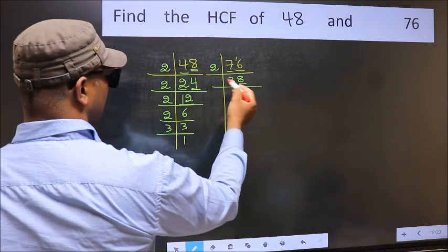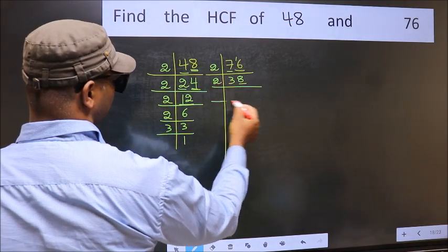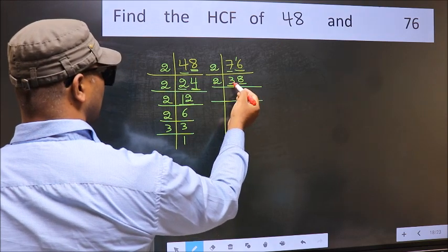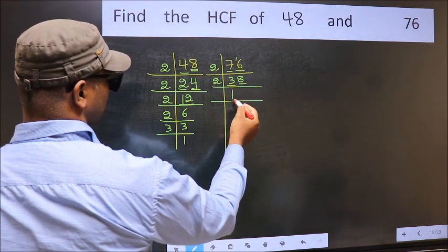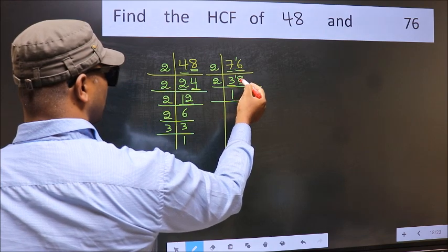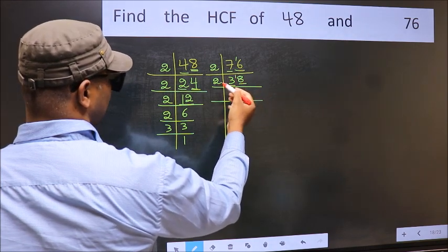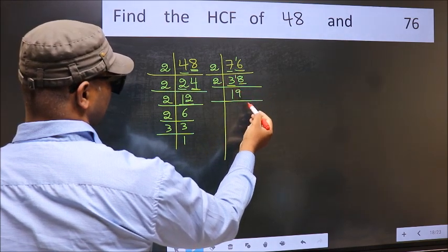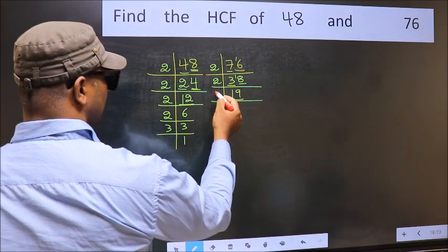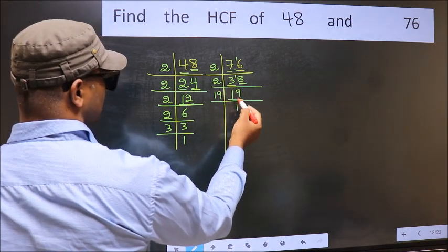Now last digit 8, even, so take 2. First number 3, a number close to 3 in 2 table is 2 times 1 is 2. 3 minus 2, 1, 1 carried forward, 18. When do we get 18 in 2 table? 2 times 9 is 18. Now 19 is a prime number, so 19 once 19.